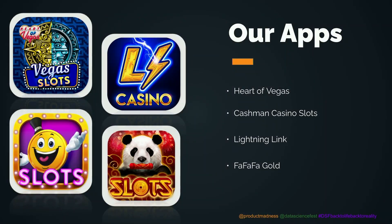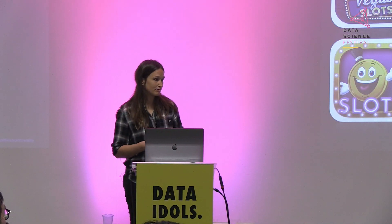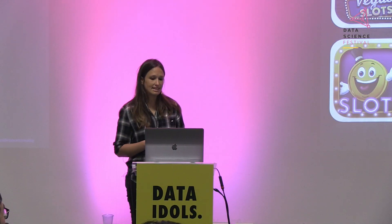We have four apps. The original was Heart of Vegas, then we introduced Cashman Casino Slots, and we have Lightning Link and Far Far Gold. Within all of these apps we're continuously trying to improve user engagement and user experience for the players, and that's where A/B testing comes in.